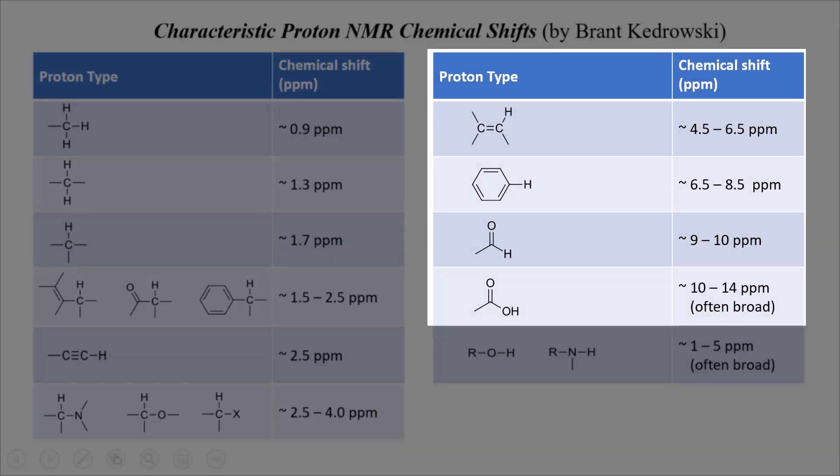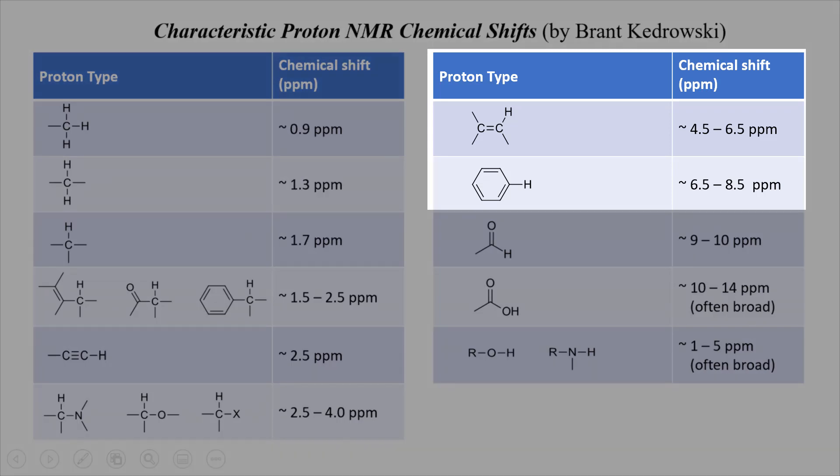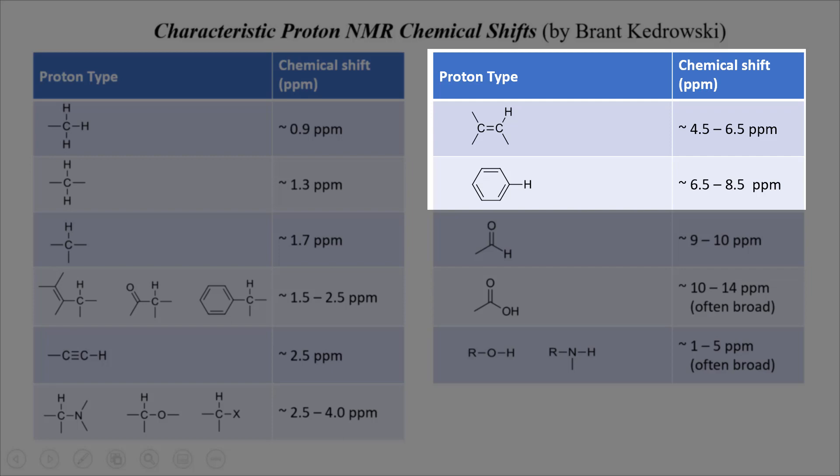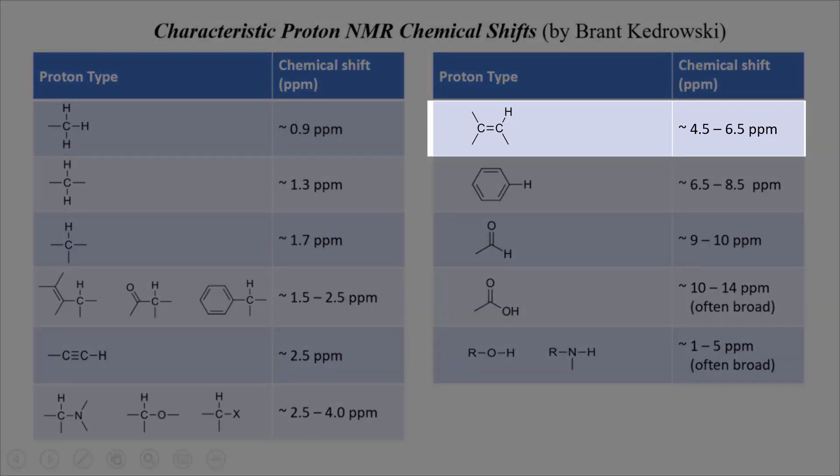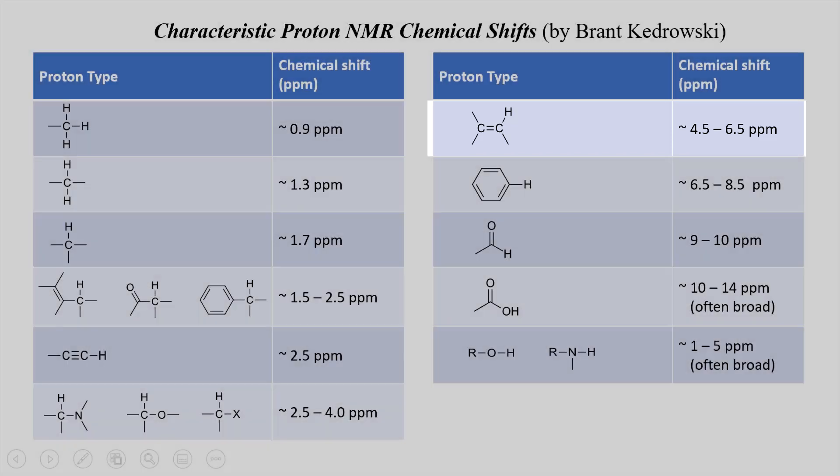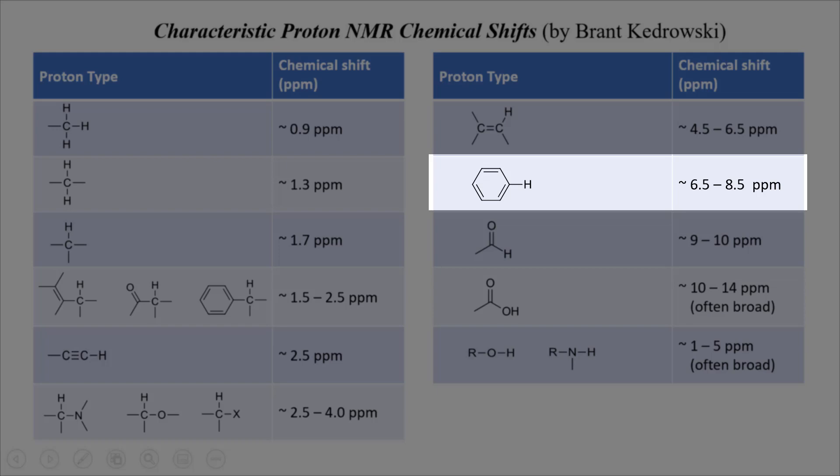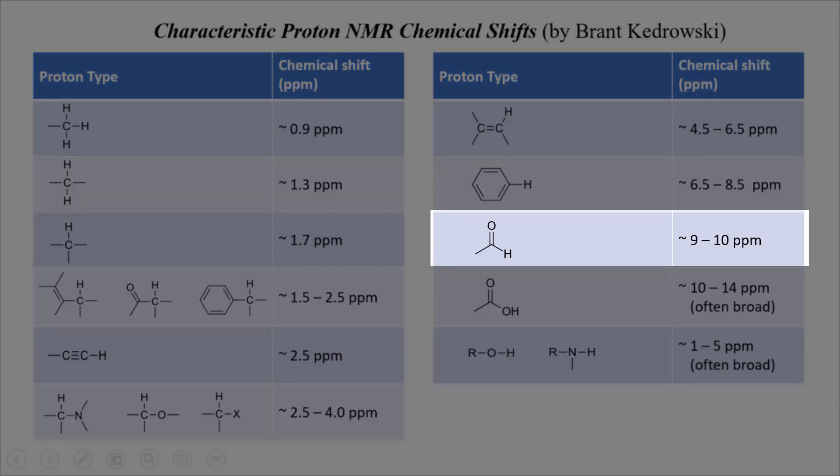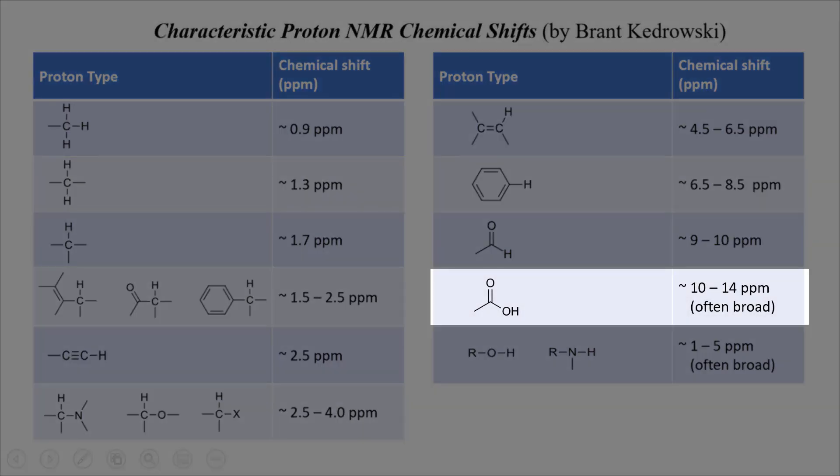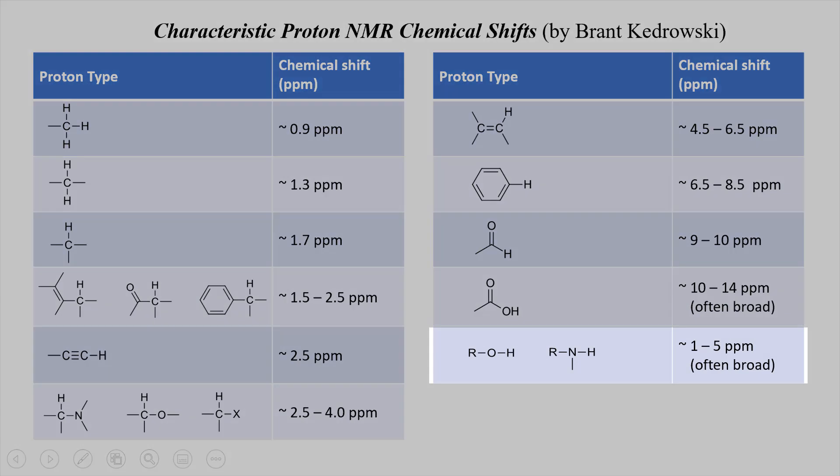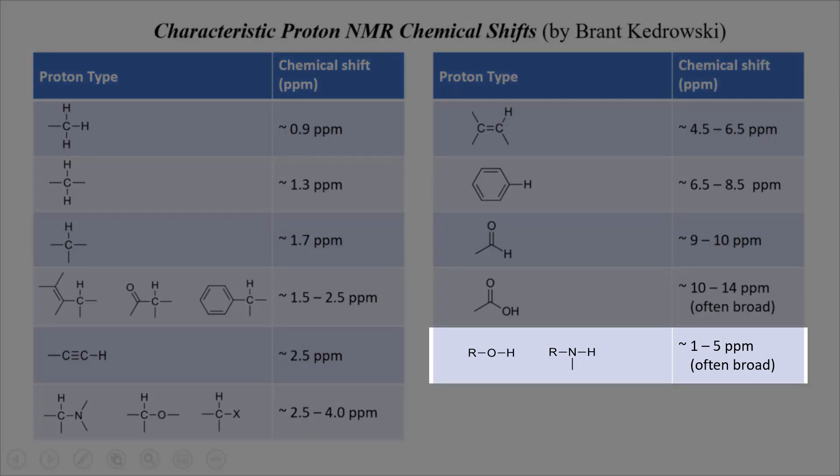The protons in the right table are even further downfield because they're attached to sp2 hybridized carbons. The top two entries in the right table are protons directly attached to a carbon-carbon double bond. In an alkene, the chemical shifts are about 4.5 to 6.5 parts per million, and for benzene rings, the protons tend to be 6.5 to 8.5 parts per million. Protons attached to the carbonyl group of an aldehyde are even further downfield at 9 to 10 parts per million, and protons of carboxylic acids are extremely downfield with chemical shifts between 10 and 14 parts per million. These peaks are often also very broad. Finally, there are the protons attached to alcohol oxygen and amine nitrogen. These tend to be broad and also quite variable in chemical shift due to the fact that they're often engaged in hydrogen bonding. 1 to 5 parts per million is common for these kinds of protons.